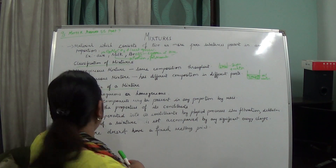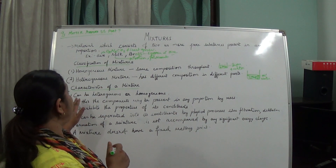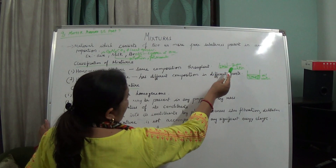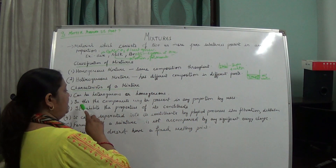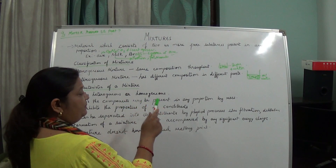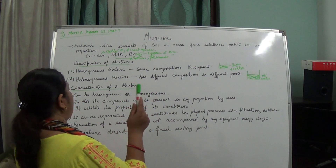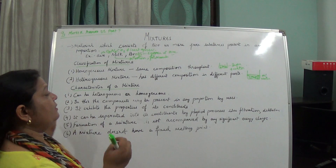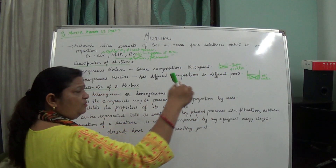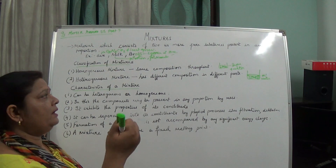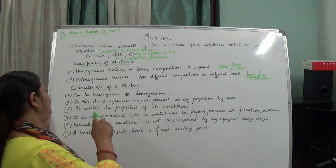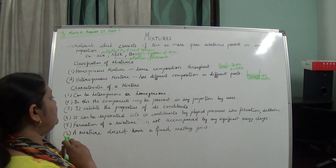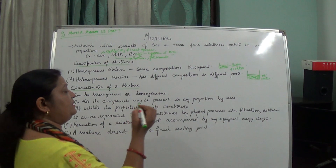Now the characteristics of mixtures: A mixture can be heterogeneous or homogeneous in nature. The components may be present in any proportion by mass. It can be in any proportion — like with sugar and water, we can take 1 teaspoon of sugar or 10 teaspoons of sugar. The proportion is not fixed. A mixture also exhibits the properties of its constituents.